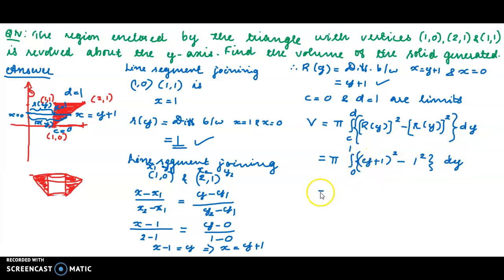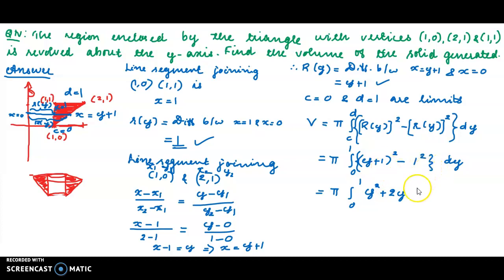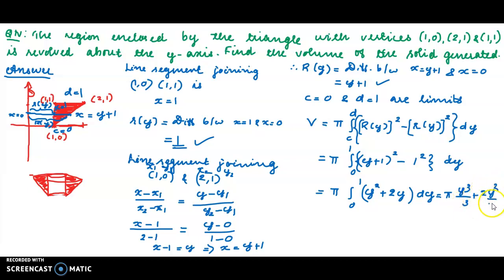This equals pi times the integral from 0 to 1 of [(y plus 1) squared minus 1] dy. Expanding (y plus 1) squared minus 1 gives y squared plus 2y. So the integral simplifies to pi times the integral from 0 to 1 of (y squared plus 2y) dy.